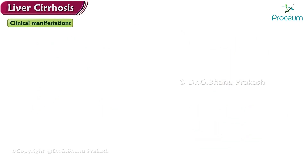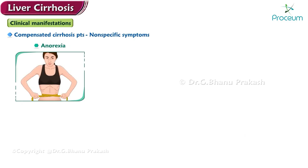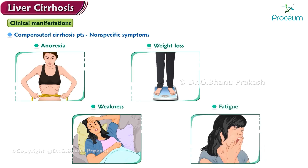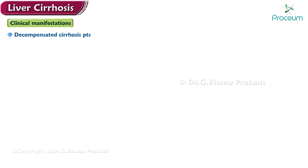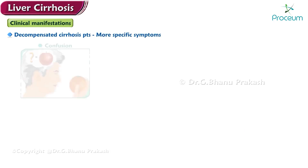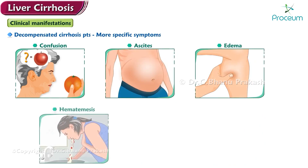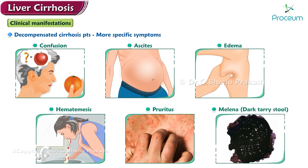Now let's talk about the clinical manifestations of cirrhosis. Compensated cirrhosis patients will classically present with nonspecific symptoms such as anorexia, weight loss, weakness, and fatigue. Decompensated cirrhosis patients may present with more specific symptoms, including confusion, ascites, edema, hematemesis, pruritus, and melena.